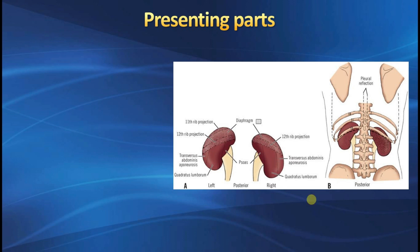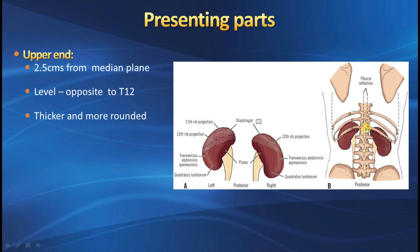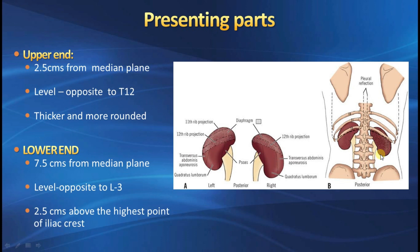The upper pole is thick and rounded, nearer to the midline — 2.5 cm lateral from the median plane at the level of D12. The lower pole is 7.5 cm away from the midline, somewhat pointed and narrow, and is just 2.5 cm above the iliac crest at the level of L3.